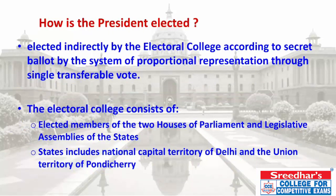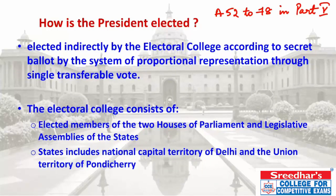So firstly, how is the President elected? Articles 52 to 78 of the Constitution, in Part 5, deal with the Union Executive.